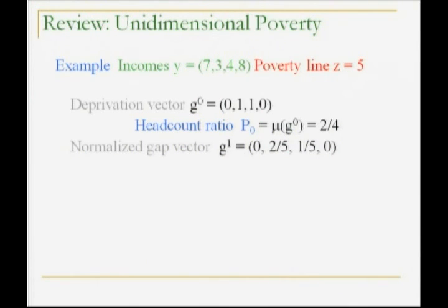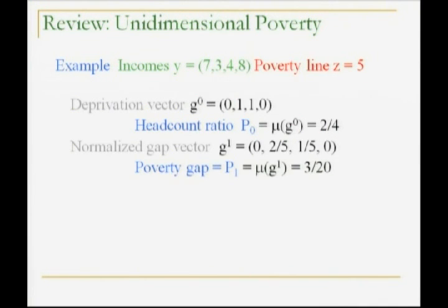The normalized gap vector is the one trying to give you an idea of how far below the poverty line people tend to be. We invoke normalized gaps: take the poverty line minus the income, over the poverty line. In the case of person 2, it's (5 minus 3) over 5, or two-fifths. For the people who are not poor, it's still zero. There's your normalized gap vector, and taking a mean of that gives you simply your poverty gap measure.